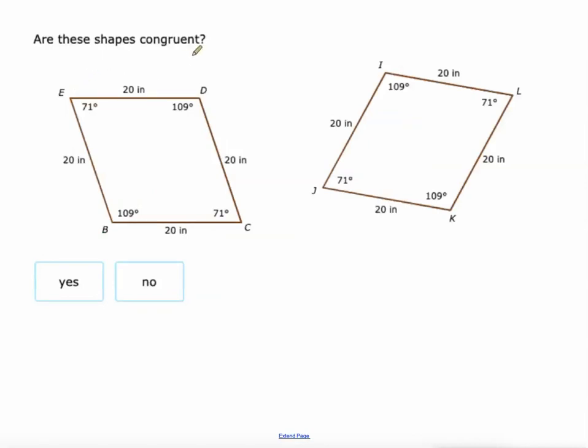All right, so it doesn't always have to be triangles though. Are these congruent to each other? Well, I see a couple of angles of 109. Okay, so that's a good start. See a couple of angles of 71. That does not guarantee congruency though. It does guarantee similarity but it doesn't guarantee congruency. And the other thing to notice is that this is a rhombus. All four sides are 20. This has the same lengths of 20 for every side. So yes, these are definitely congruent.